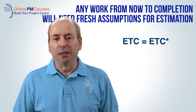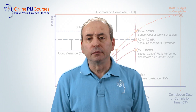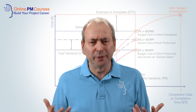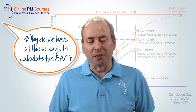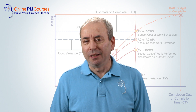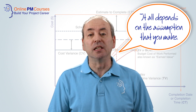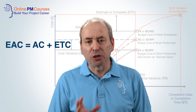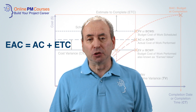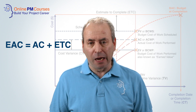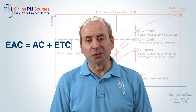Our Estimate to Complete is a new Estimate to Complete based on completely new work. So the question a lot of people might be thinking is: why do we have all this complexity? Why do we have all these different ways to calculate the Estimate at Completion and the Estimate to Complete? Well, the answer is it all depends on the assumption that you make. The calculation of Estimate at Completion is simple — it's your actual cost of work performed to date plus your Estimate to Complete. All we're doing is trying to find an appropriate way to forecast how much it will cost us to do the remaining work, because we know precisely how much work we've done and how much that has cost us to date.